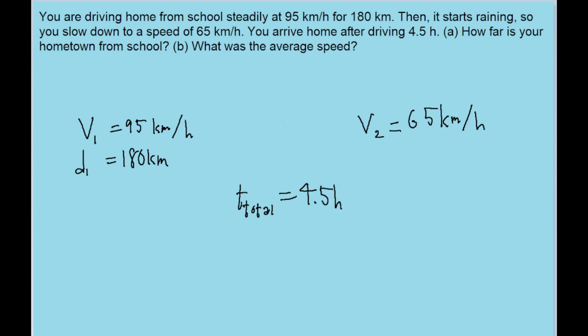Now what's interesting and also kind of tricky about this problem is that there are sort of two phases to the motion here: the first phase when we're going 95 and the second phase when we're going 65. So if we want to solve this problem, we want to figure out what some of the other unknowns are for each phase. So I've labeled phase 1 to be 95 and phase 2 to be 65, and I've labeled the rest of the information as shown here.